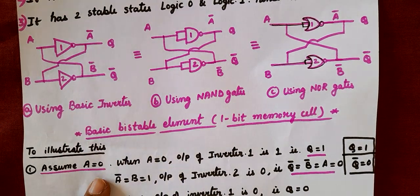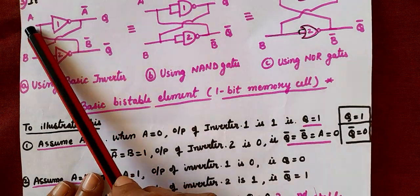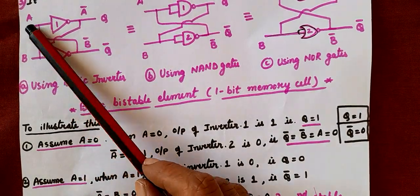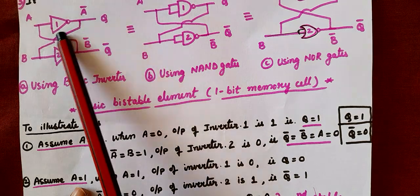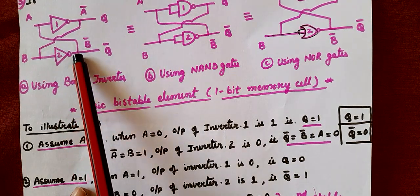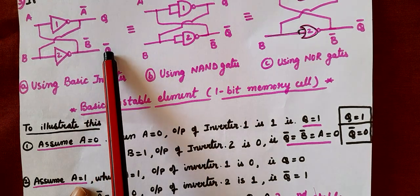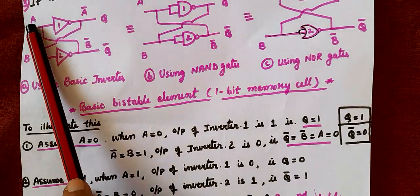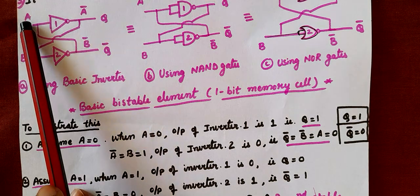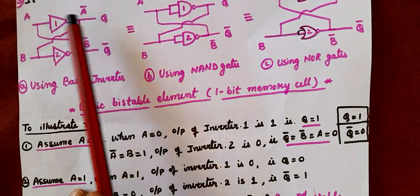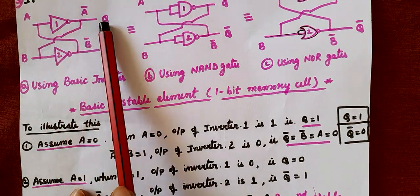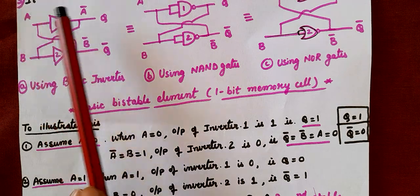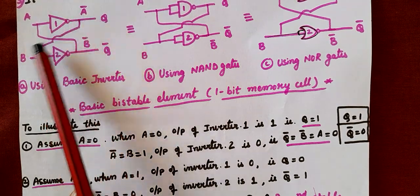We have to assume one value for the input. Now let us assume A is equal to 1. If A is 1, what will be the output? It will be 0. When A is 0, Q is 1; when A is 1, Q is 0. It is simply a NOT gate explanation. If you remember this point, the other point is very clear.